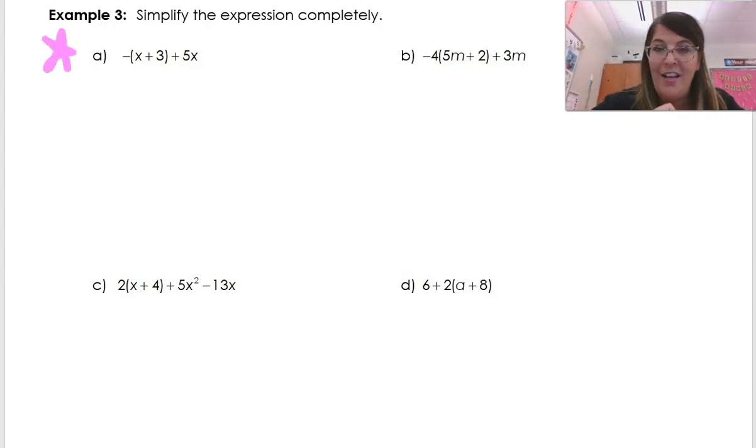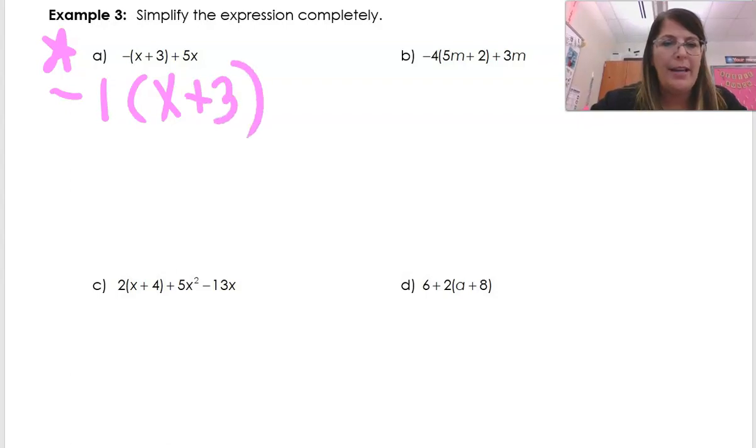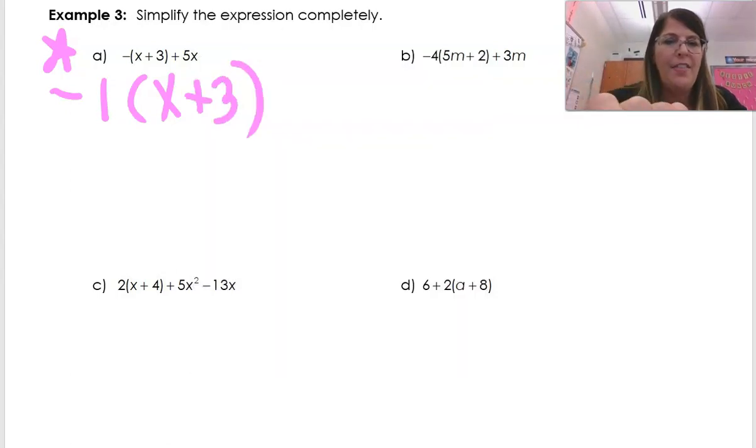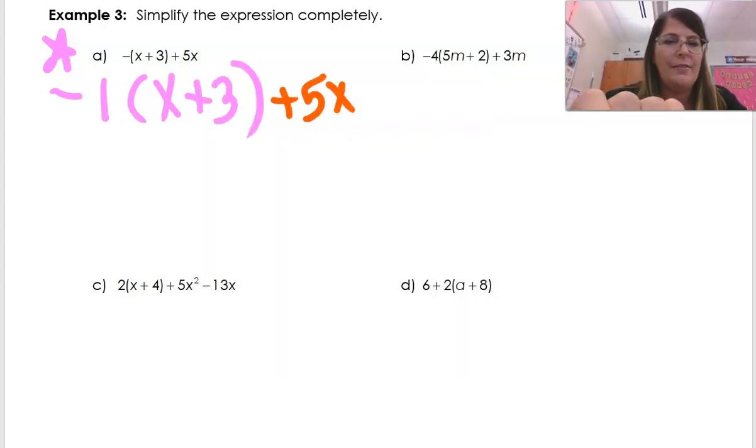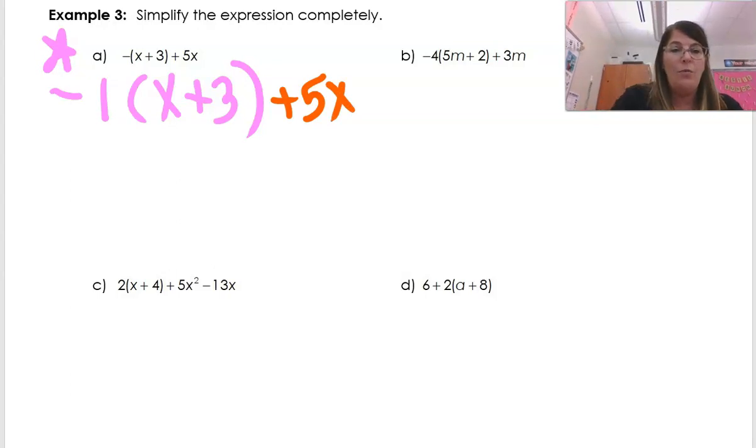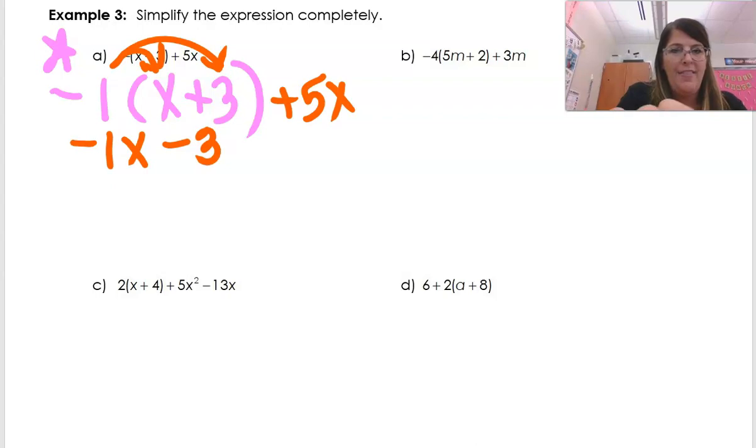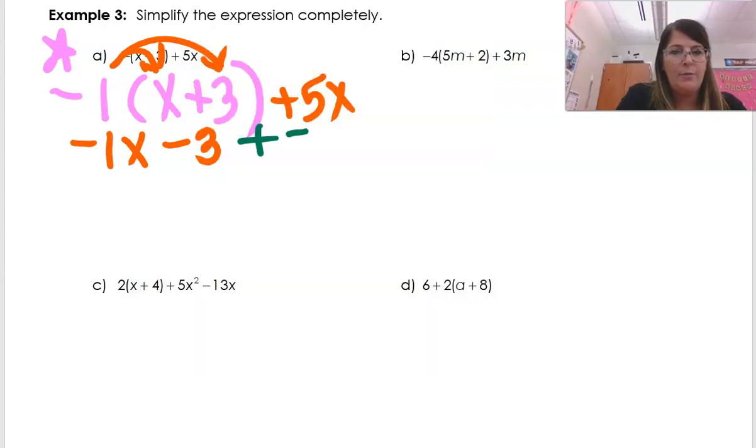So the first thing I want you to see is when you have a negative on the outside, just a minus sign there, I want you to think of that as a negative 1 times the quantity of x plus 3. And then there's plus 5x. So this negative 1 on the outside has to get distributed to everything on the inside. So this is going to become negative 1x, negative 1 times positive 3 is minus 3. And notice, I still have this plus 5x.